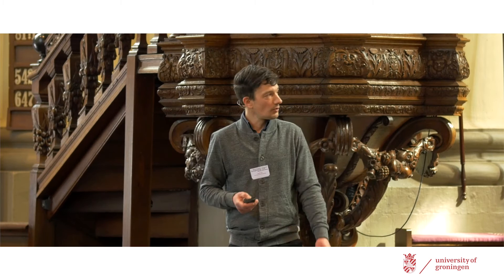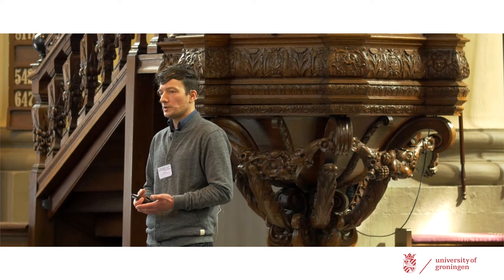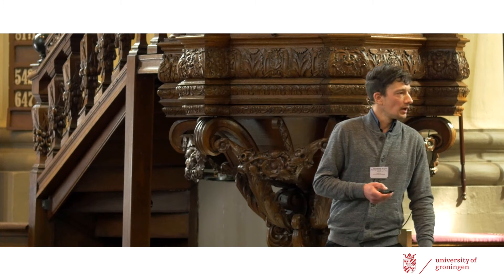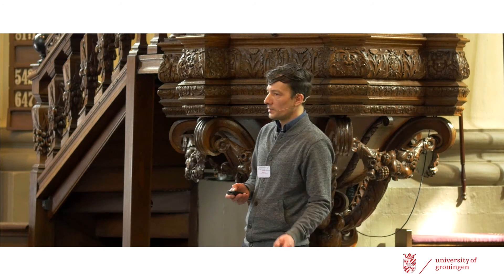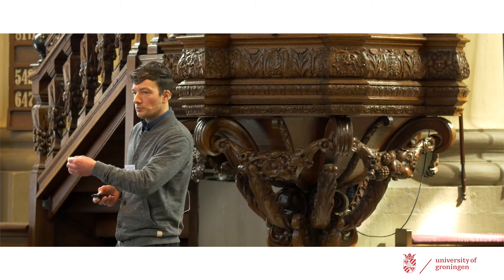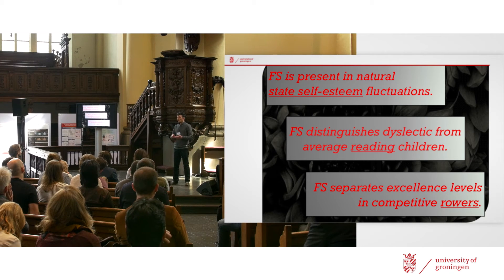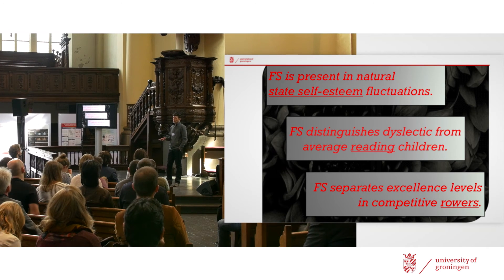Here are three examples from our own research. If you look at the fluctuation in state self-esteem of adolescents during interaction, fractal scaling is present in that and it is associated with the autonomy level. If you look at response time variability in a lexical decision task, fractal scaling can distinguish between dyslexic and average-reading children, and it is very strongly negatively associated with the severity of the reading impairment. As a third example, if you look at competitive rowers, fractal scaling separates excellence levels — all rowers have fractal scaling, but the better rowers have more of it. These three studies, as many more, are very strong and convincing in showing that there is system complexity underlying all human behavior.